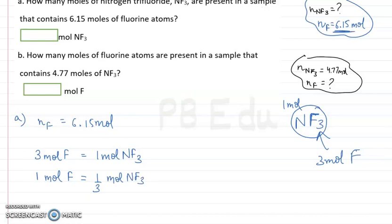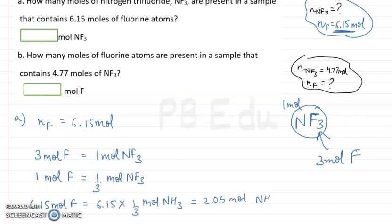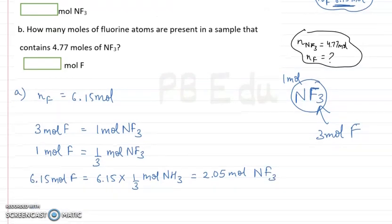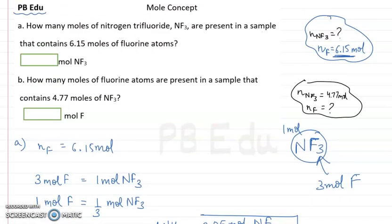Now we are given 6.15 moles of fluorine atom, so we multiply both sides by 6.15. After calculation we get 2.05 moles of NF3. So in a sample that contains 6.15 moles of fluorine atoms, we will have 2.05 moles of NF3. The answer is 2.05 moles.